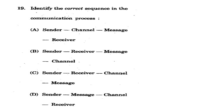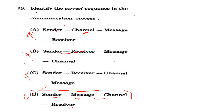Question 19: Identify the correct sequence in the communication process. Options include: sender→channel→message→receiver; sender→receiver (eliminated - sender cannot directly reach receiver); sender→message→channel→receiver. The correct option is D: sender → message → channel → receiver. This is the process of communication - sender creates the message, which goes through a channel to reach the receiver.